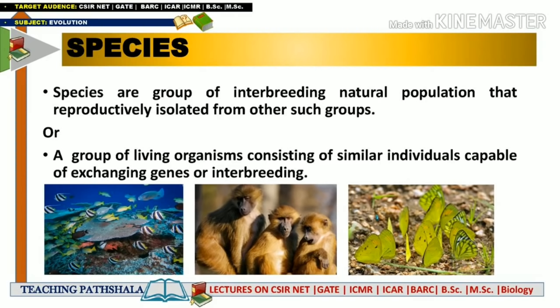In front of you there are three pictures showing specific species groups. According to the biological species concept, species are those natural populations which are capable of interbreeding with each other. Interbreeding or reproduction between members of the same group is one of the most important factors that makes them members of the same species group.